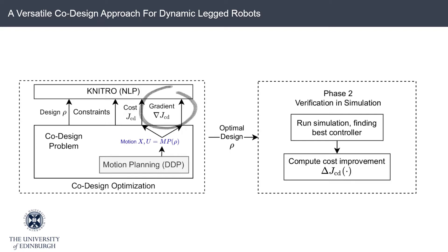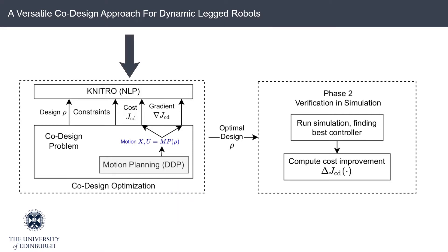We directly take the derivative of the motion planner without considering the underlying optimization explicitly. Our approach contains an upper level and a lower level optimization for robot design and motion planning respectively, where in the lower level we use an efficient state-of-the-art constraint motion planner and in the upper level we formulate the co-design problem as a non-linear program with equality and inequality constraints. Finally, in a second stage, we verify the design improvements in a physics simulator.